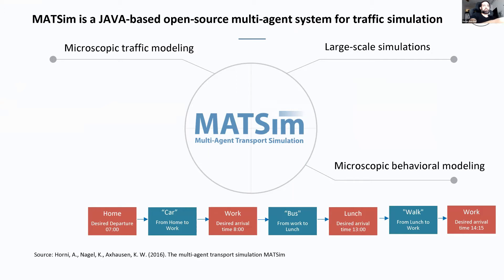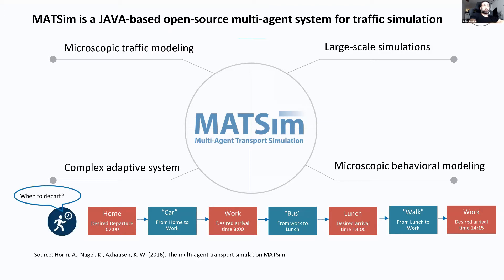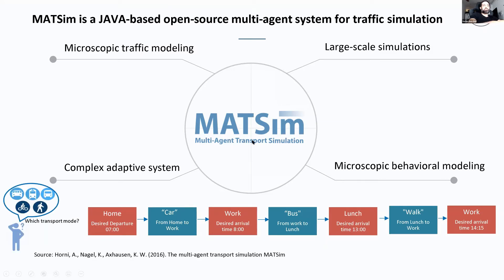MATSim is activity-based. An agent might have a home, use a car to go to work, and you have millions of these agents whose emerging behavior creates traffic interactions. MATSim also has complex adaptive systems, so an agent can change their departure time, route, and transport mode. If using a bus instead of a car makes the agent arrive earlier, they will switch in the next iteration.